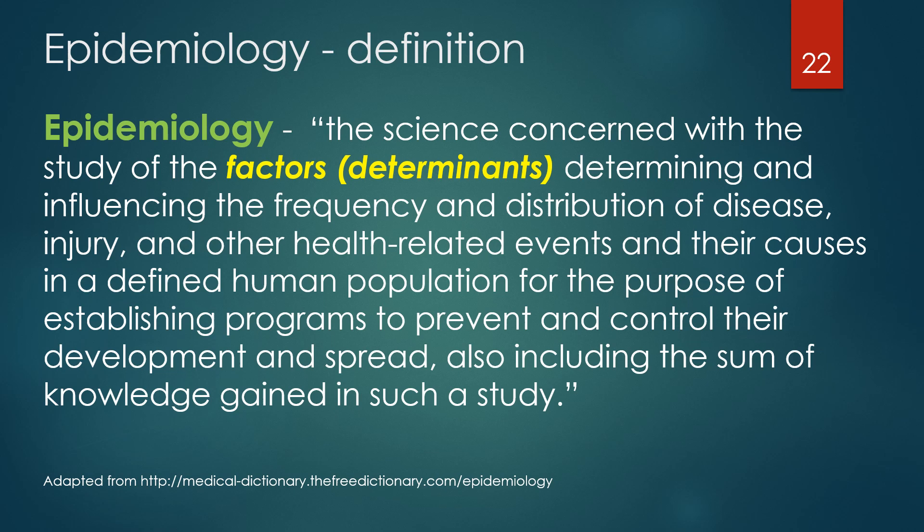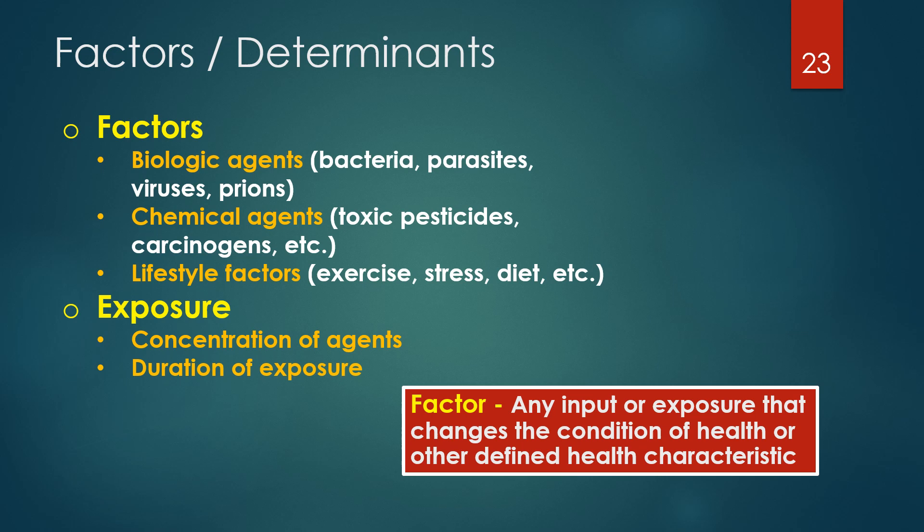Factors or determinants mean any input or exposure that changes the condition of health or other defined health characteristic. This could include biologic agents like bacteria, parasites, viruses, and prions; chemicals like toxic pesticides and carcinogens; and lifestyle factors like exercise, stress, and diet. The impact of exposures includes things like concentration of an agent, time of exposure to an input — like the amount of sun exposure associated with skin cancer — or number of bacteria associated with disease onset. For example, Salmonella generally requires exposure to many organisms to cause disease, where Shigella requires very few.